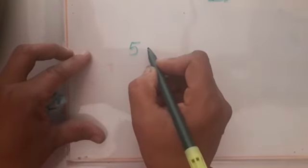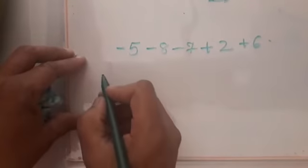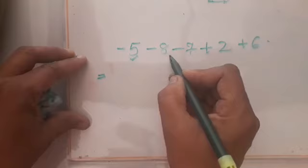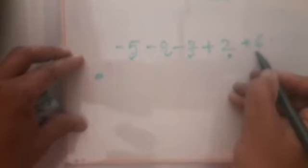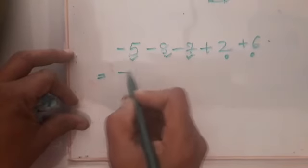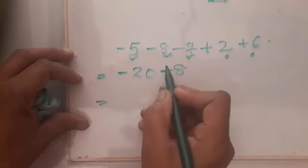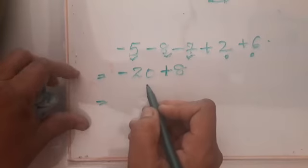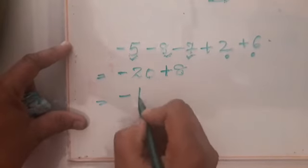One more example: 5 minus 8 minus 7 plus 2 plus 6. Find the numbers having the same sign. Minus 8, minus 7, and minus 5 — no sign means plus 5 — wait: the negatives are minus 8 and minus 7, and with minus 5, add them: 7 plus 8 plus 5 is 20, giving minus 20. The positives are plus 2 and plus 6: 6 plus 2 is 8, giving plus 8. Opposite signs, so subtract: 20 minus 8 is 12. Since 20 is the bigger number with a negative sign, the answer is minus 12.